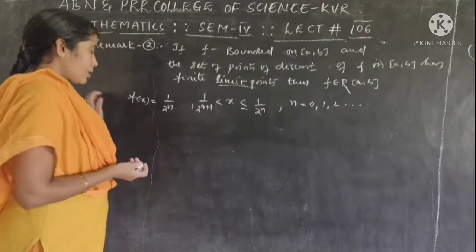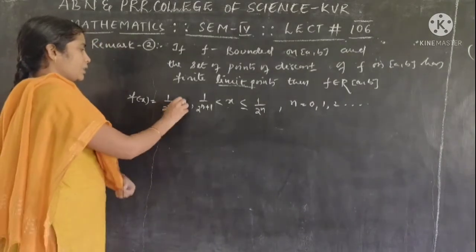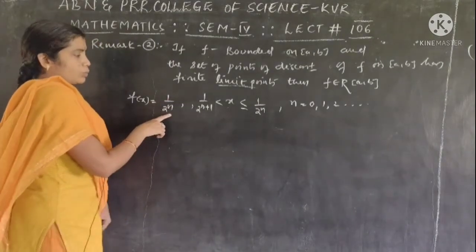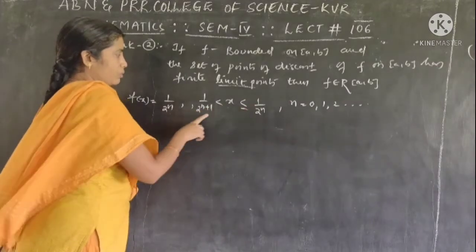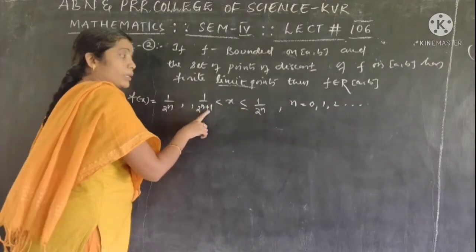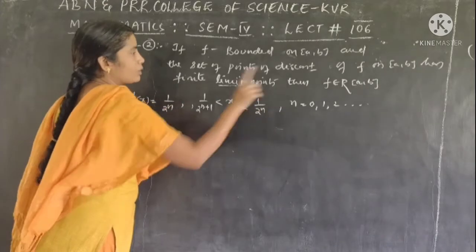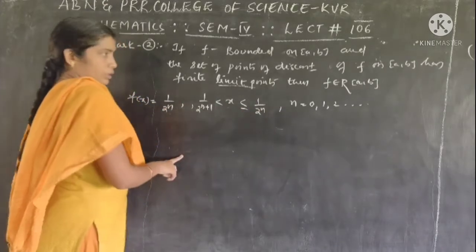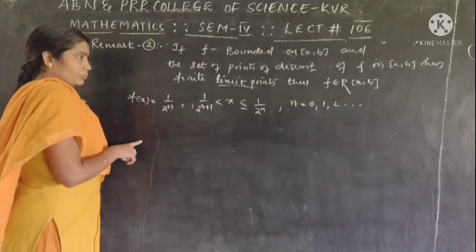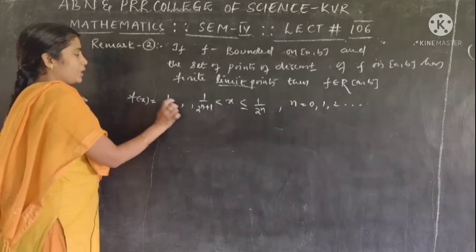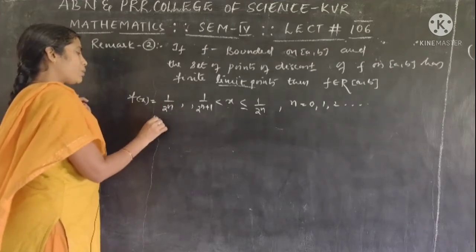Let us see an example. The function is f(x) = 1/2^n, if x is in between 1/2^n and 1/2^(n+1), where n runs from 0, 1, 2, and so on — whole numbers. If we choose this function, it is a bounded function.